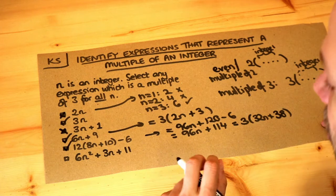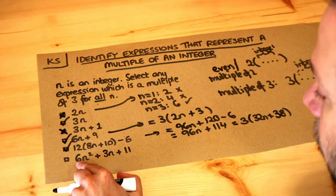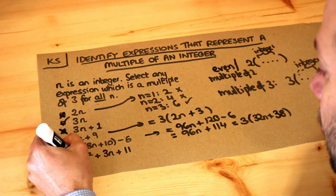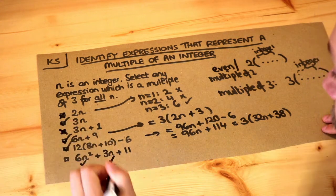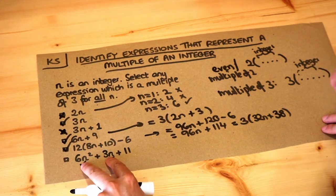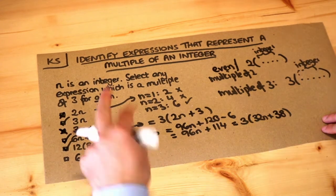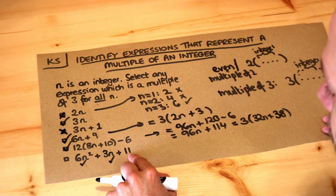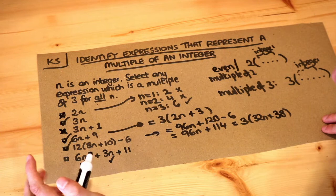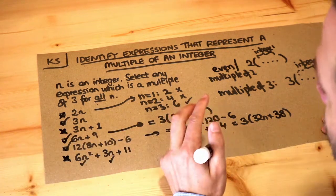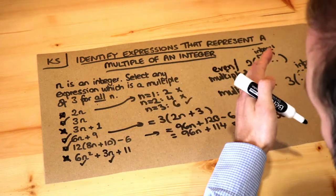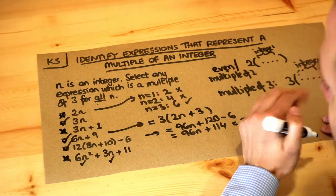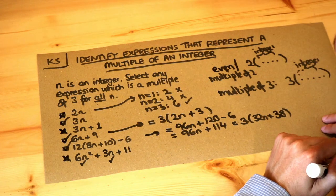For the final one we can use common sense. Six n squared — six is a multiple of three, so anything times six is a multiple of three. Three n is clearly a multiple of three. So six n squared plus three n is a multiple of three, because a multiple of three plus a multiple of three is still a multiple of three. But we're then adding a number which is not a multiple of three, so overall the expression is not a multiple of three. In general, a multiple of three plus something that is not a multiple of three gives something that is not a multiple of three.